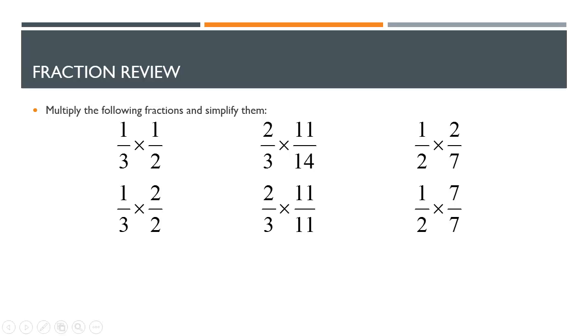Hopefully you know that as you multiply fractions, you multiply across the top and across the bottom. So the answer to this one would be 1 over 6. This one we can simplify before we multiply, so we get 11 over 21. This one we can also simplify because we have the 2's there, so we get 1 over 7.